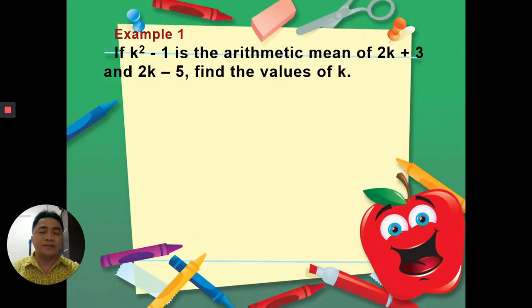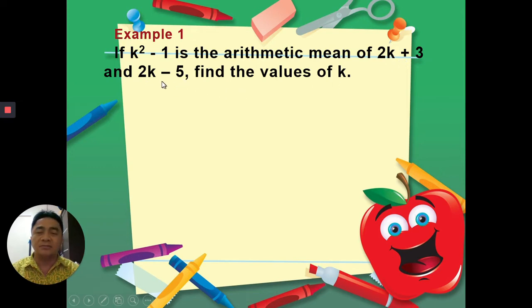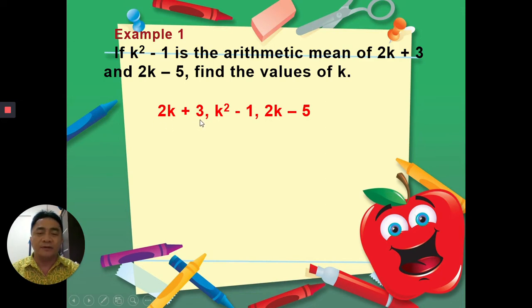Here is our first example: if k² − 1 is the arithmetic mean of 2k + 3 and 2k − 5, find the values of k. The terms are arranged as follows: the first term is 2k + 3, the arithmetic mean or second term is k² − 1, and the last term or third term is 2k − 5.